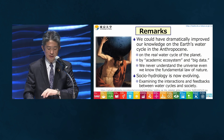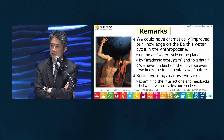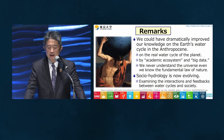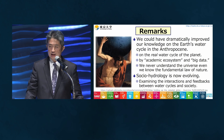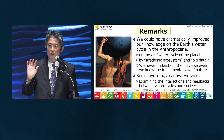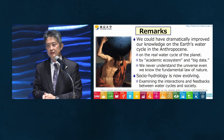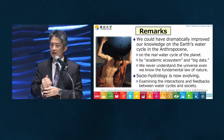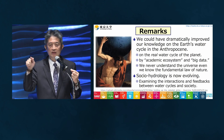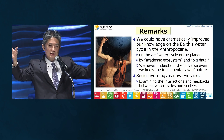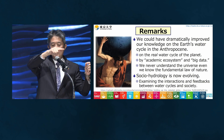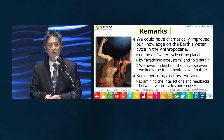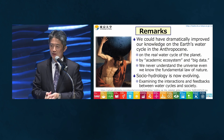In conclusion, we have dramatically improved our knowledge of the Earth's water cycle in the Anthropocene. We still have many uncertainties about the current water cycle and future projections. However, we are now pursuing the interaction between the water cycle and social change — sociohydrology is evolving, and more integrated study will be needed for the future. Thank you very much for your attention.